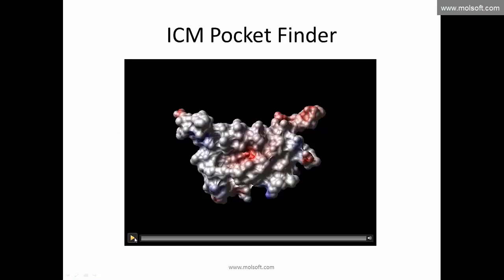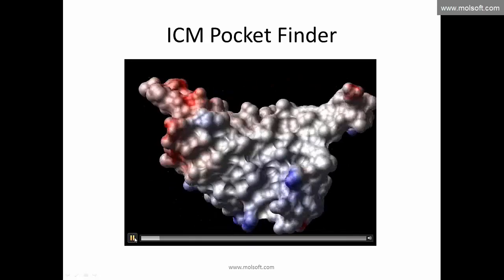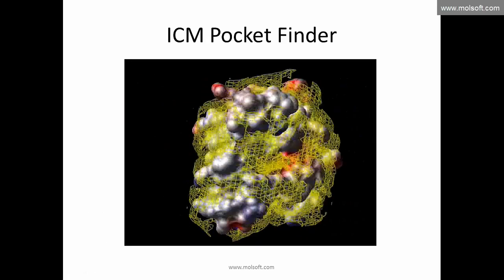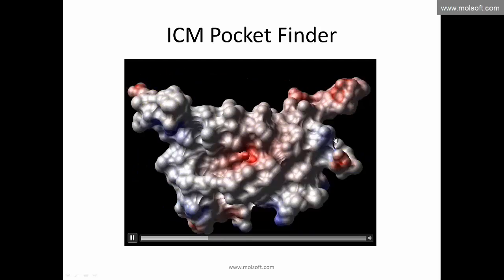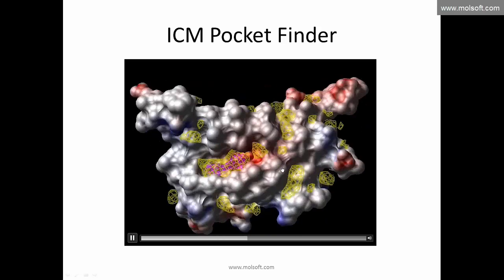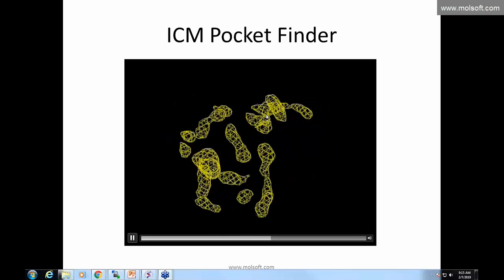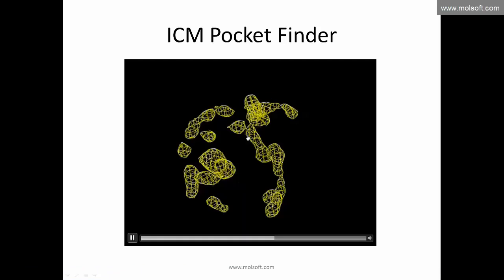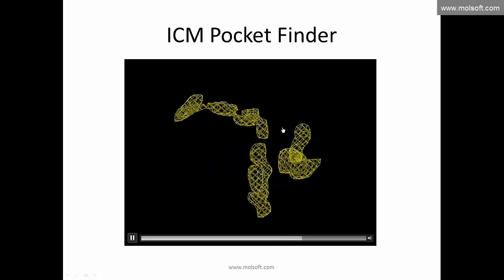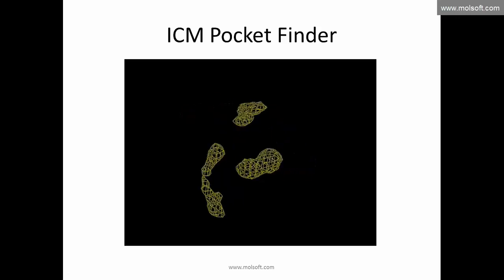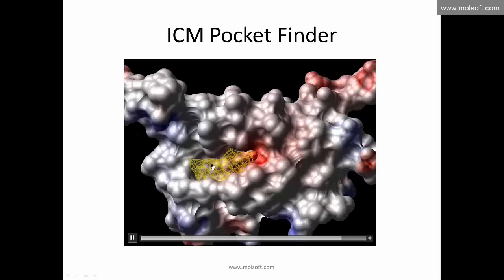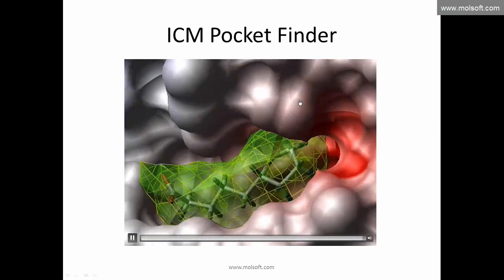Today we're going to download the protein structure from the PDB, use the tools in ICM Pocket Finder to go across the surface of the structure, and identify cavities. Once you've identified the cavities, you need to discriminate ones that are not drug-like — too small, too large, or too exposed — to be a drug-like pocket. Hopefully we'll come down to find the orthosteric site and also other potential ligand binding sites.